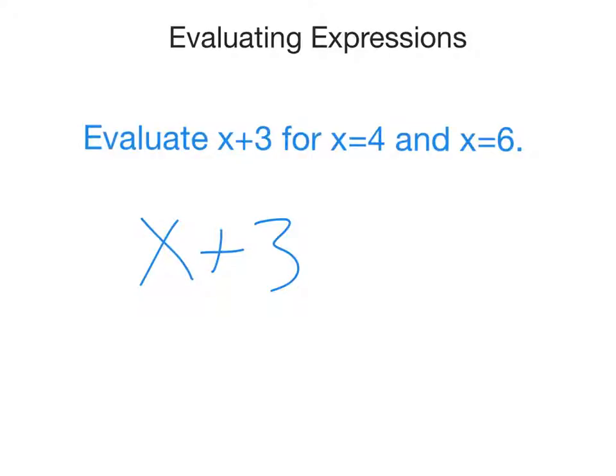This is our expression, x plus 3. What it's asking us to do is evaluate it for x equals 4. Now when it says evaluate, all that means is we take the value it tells us we should use for x and replace the x with that value. So x equals 4. Everywhere I see an x, I just put a 4. There's nothing else to do but add the 3. So when we evaluate x plus 3 for x equals 4, we get 7.